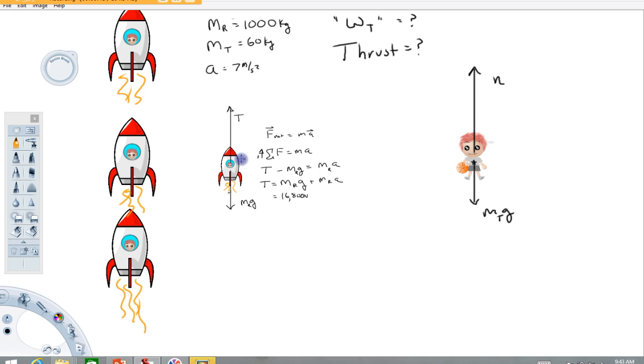Now you'll notice that this thrust force here that we calculated does not appear in this free body, and it shouldn't, because that thrust is acting on the rocket. It's not directly acting on Timmy. As the rocket accelerates, what that does is that increases this normal force acting on Timmy. Now you'll also notice this normal is not in a free body of the rocket. That's because within this system this normal would be an internal force.